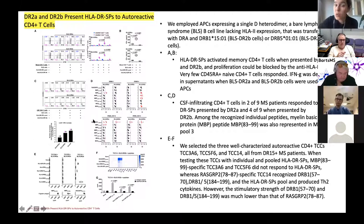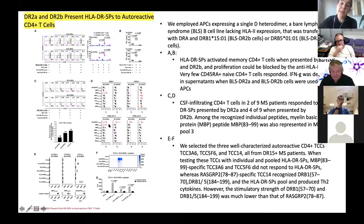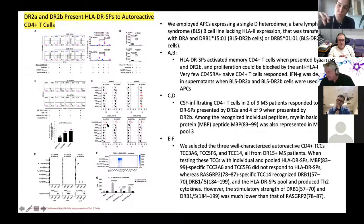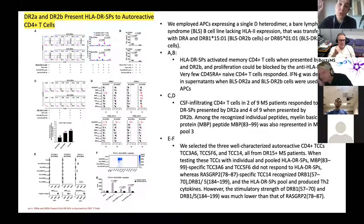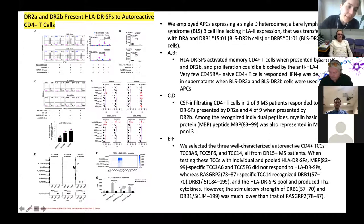The second big conclusion is that memory B cells carrying the HLA receptor can stimulate T cells and can stimulate autoreactive T cells, which are potentially pathogenic in MS. The third conclusion is that these receptors respond not only to self-peptides but also to certain environmental peptides coming from EBV (Epstein-Barr virus) and Akkermansia muciniphila — a bacterium present in the gut that is overrepresented in people with MS.